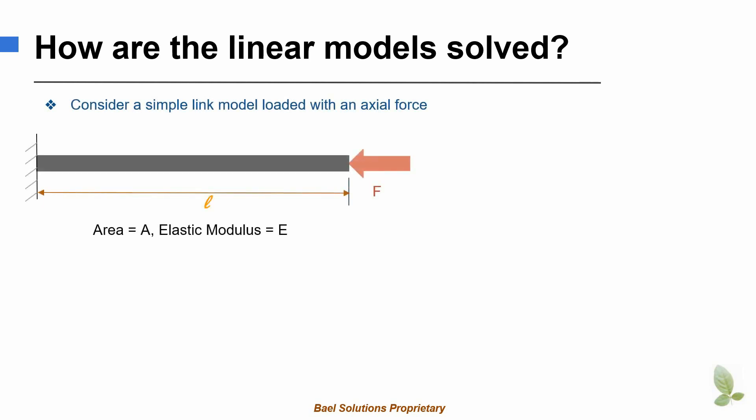Consider a simple bar loaded with an axial force. Let the area of the cross section be A, the length of the beam be L, the elastic modulus be E, and the axial load be F.